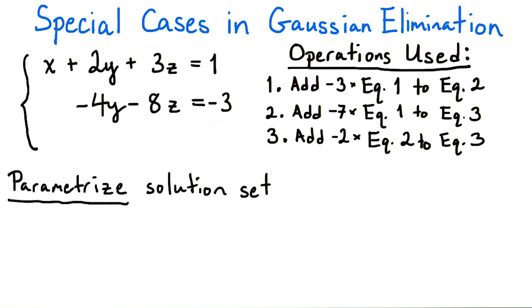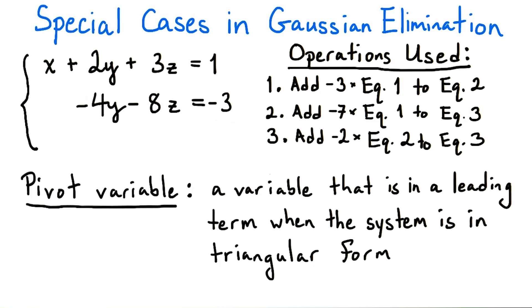First, after dropping the 0 equals 0 equation, notice that we cannot clear terms downward anymore. Instead, what we will do is identify what are called pivot variables. These are variables whose values will be determined by the values of the non-pivot or free variables. The pivot variables are the variables which are leading terms in our equations.